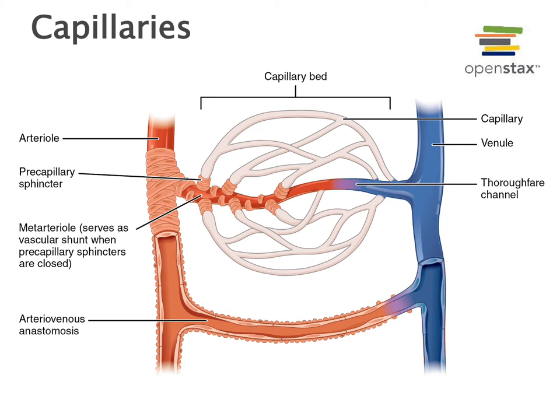In contrast, when a tissue needs increased exchange of nutrients and waste — for example when a skeletal muscle is contracting to produce motion — the high metabolic rate produces lots of carbon dioxide and rapidly uses oxygen. This stimulates relaxation of the smooth muscle in the arterioles and relaxation of the pre-capillary sphincters to increase blood flow through the capillary bed, helping to provide nutrients and carry away waste.